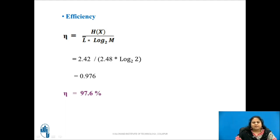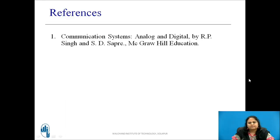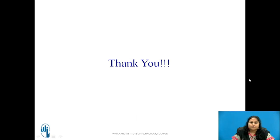Thus, in this session, we have seen how Shannon-Fano coding technique is applied for problems having ambiguity in partitioning the messages. You can also try to solve this problem considering m equal to 3 and check out the efficiency of the system. This is the reference used. Thank you.